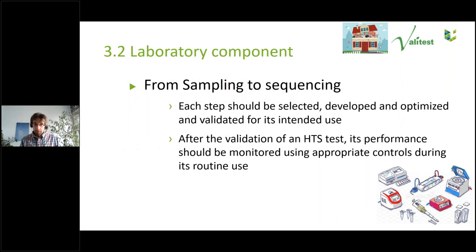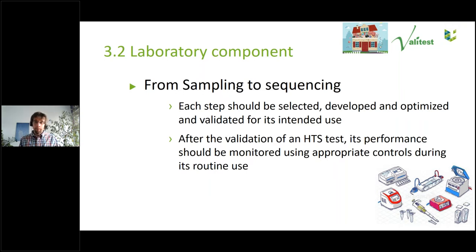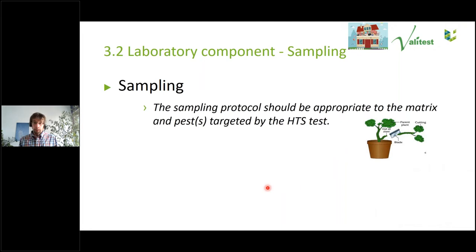For the laboratory components, remember the process goes from sampling to sequencing. You should select each step: what is my sampling protocol, my nucleic acid extraction protocol, my library preparation protocol, and so on. Develop them if needed, or if you have a validated one, verify and optimize it for the intended use described in the scope. Once validated, the story has not ended — you should monitor performance throughout time during routine use, which is manageable; the guidelines explain how to monitor over time using data generated every month or every week.